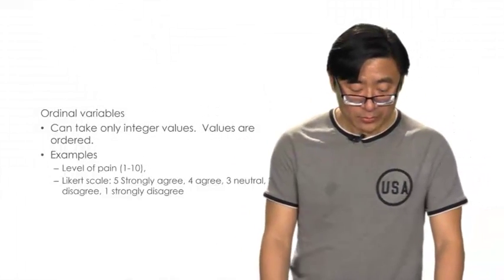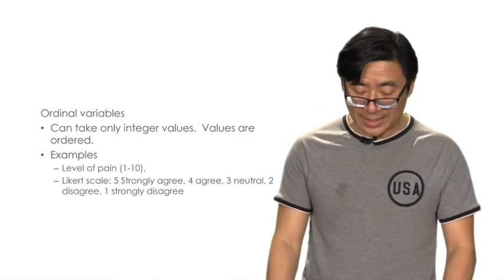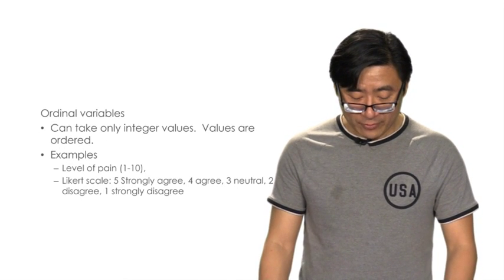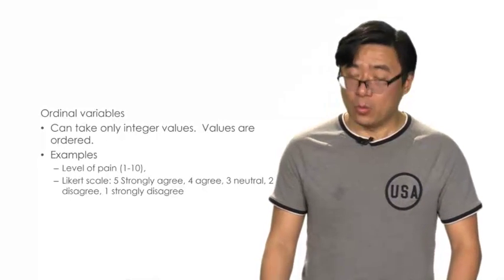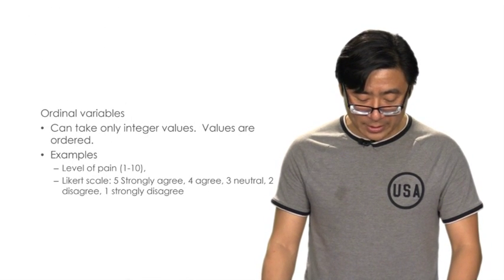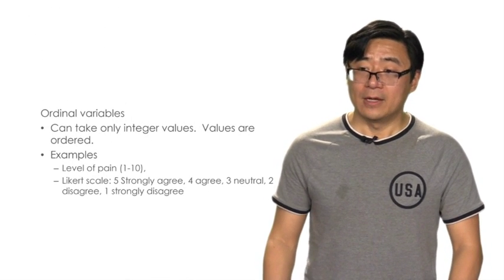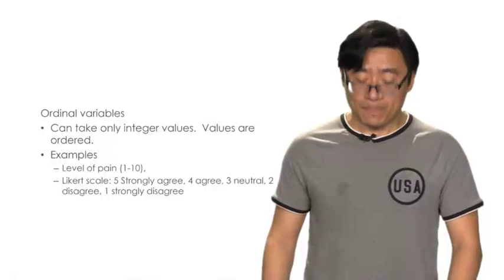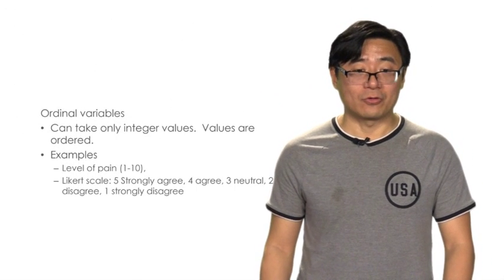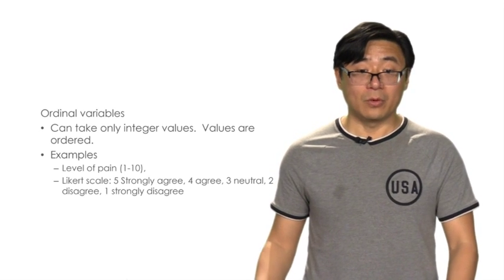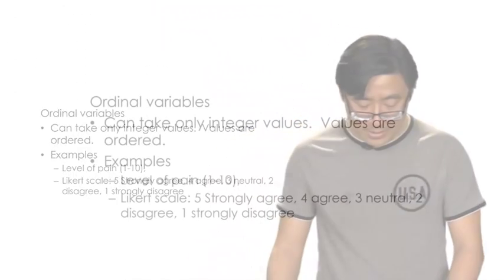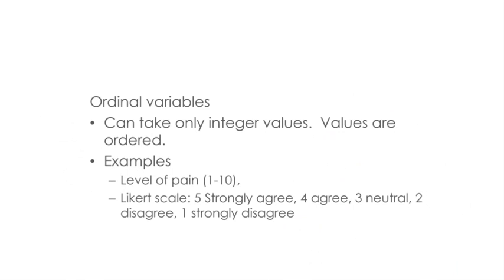Ordinal variables can take only integer values or whole numbers, and the values are ordered. Examples include the level of pain, named from 1 to 10 using only integers such as 1, 2, 3, 6, or 10, and Likert scale variables used in surveys — for example, 5 for strongly agree, 4 for agree, 3 for neutral, 2 for disagree, and 1 for strongly disagree.